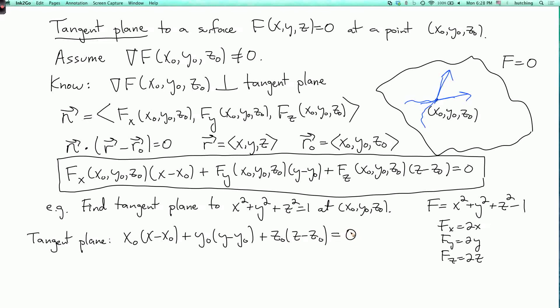Expanding this out gives: x₀·x + y₀·y + z₀·z = x₀²+y₀²+z₀², which equals 1. So that's the same equation we got before.